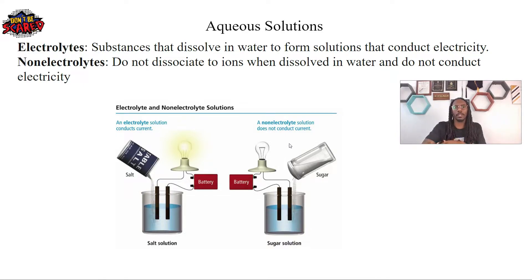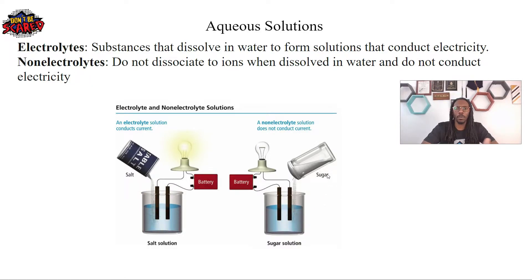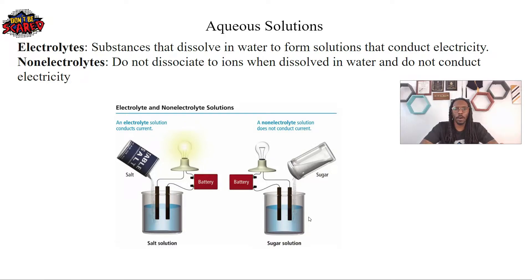Compare that to non-electrolyte solutions — they're not able to conduct electricity, and the reason is because there are no ions. So if I dissolve some sugar in the solution, do I have any ions in sugar? No. There are no ions that are going to form, and so we're not able to conduct electricity. If you connect a battery to our electrodes, no electricity will be conducted with the sugar solution — no ions.